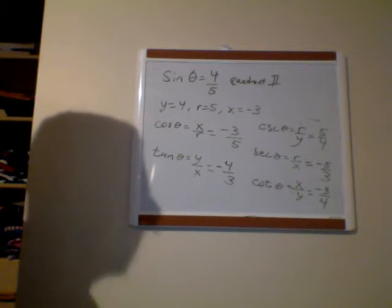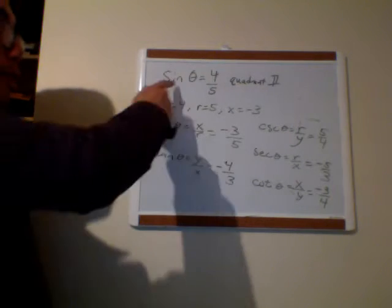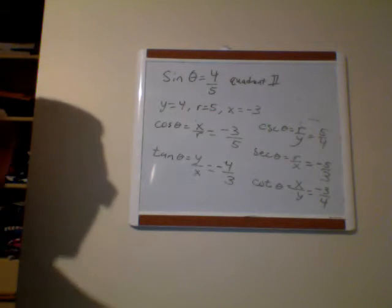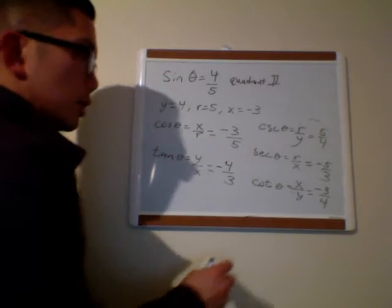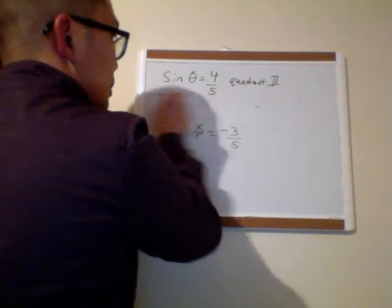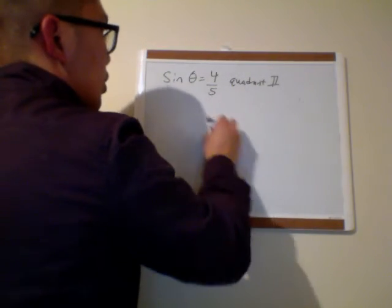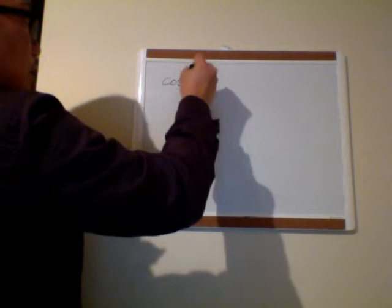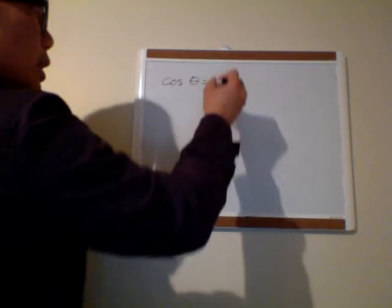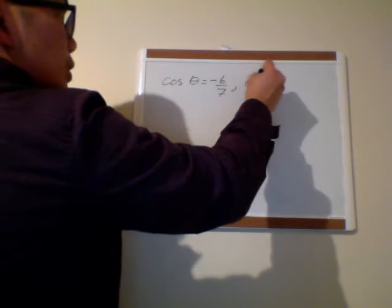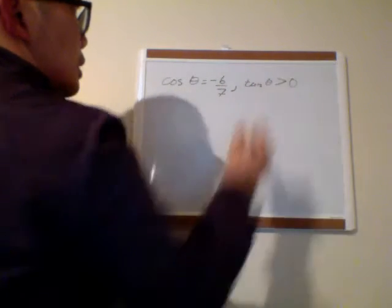And those are your five other trig functions given the sine and the quadrant. Now let me do one more problem. Let's say they gave you the cosine theta is negative 6 over 7, and they say tangent of theta is greater than 0.